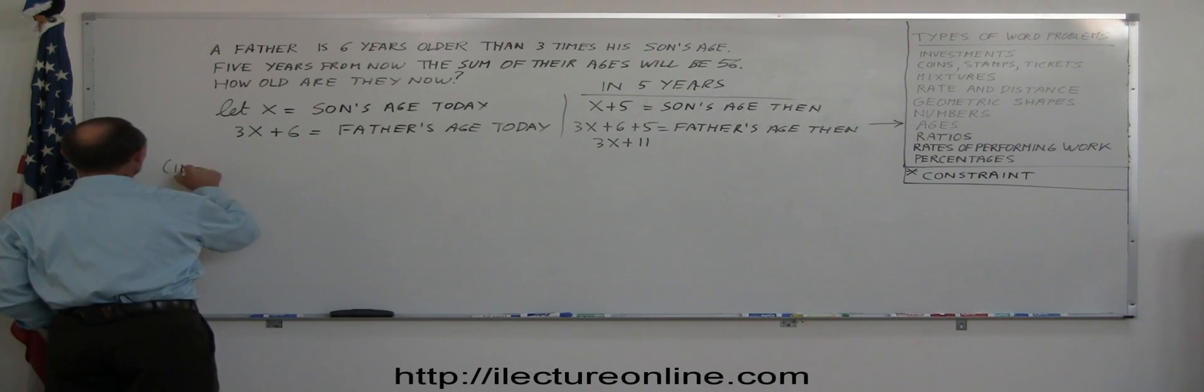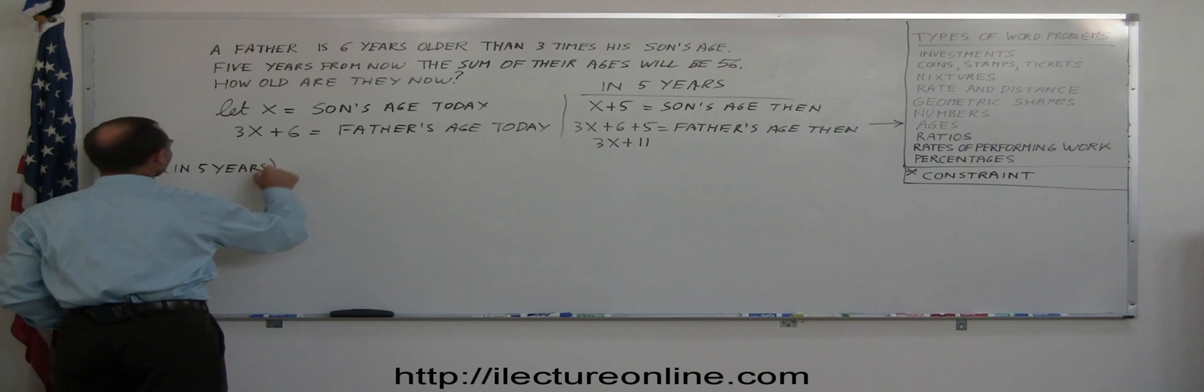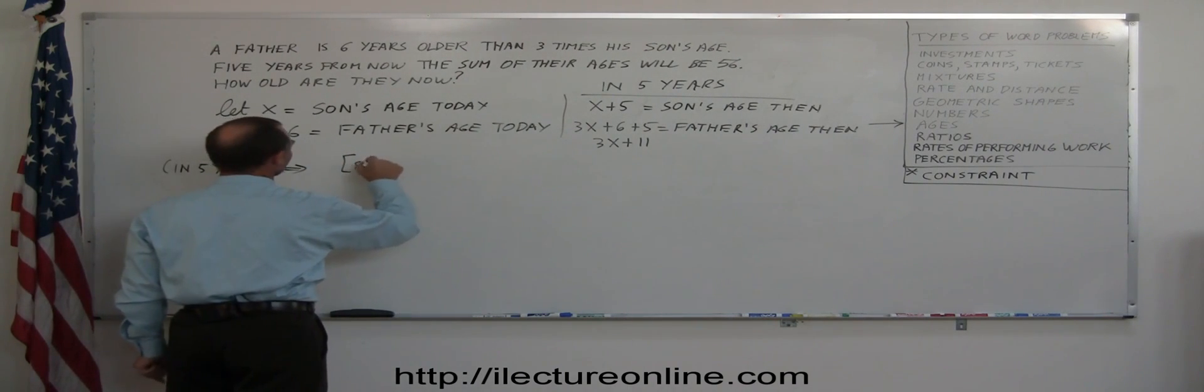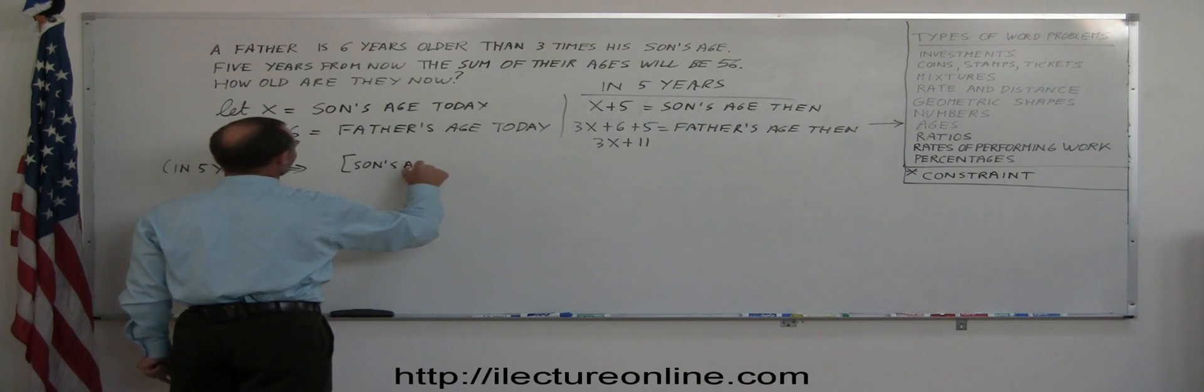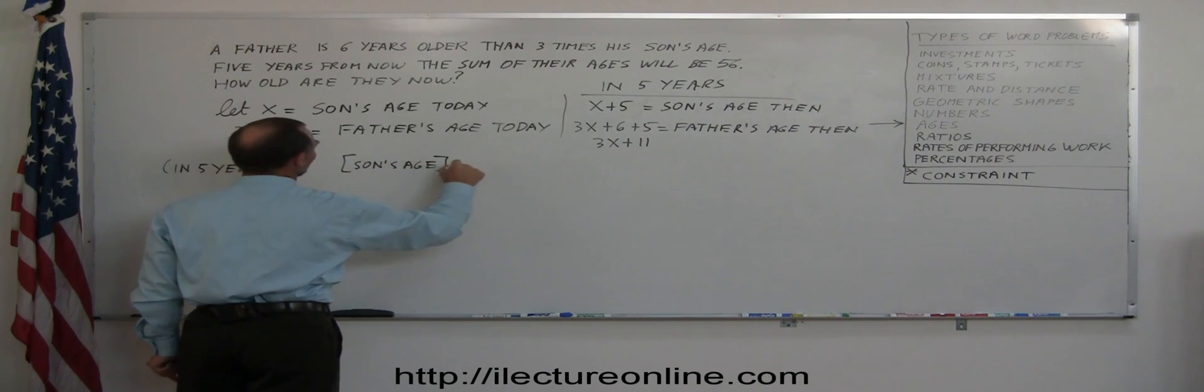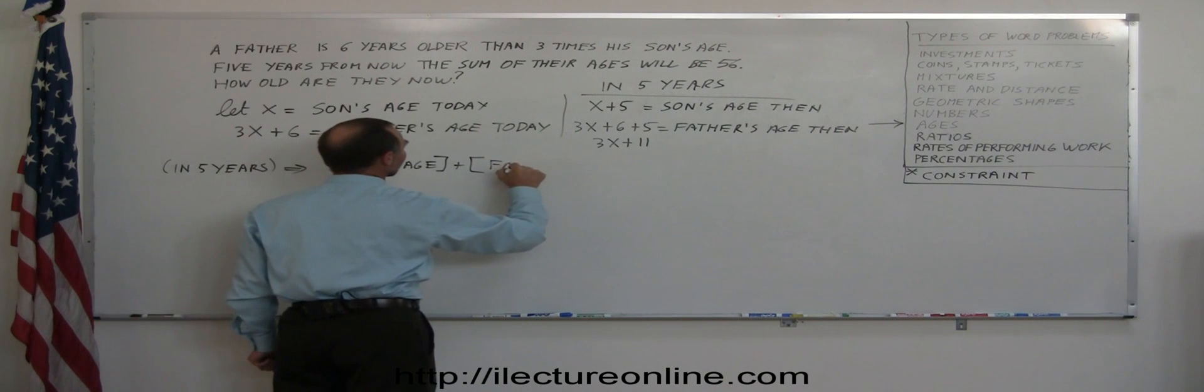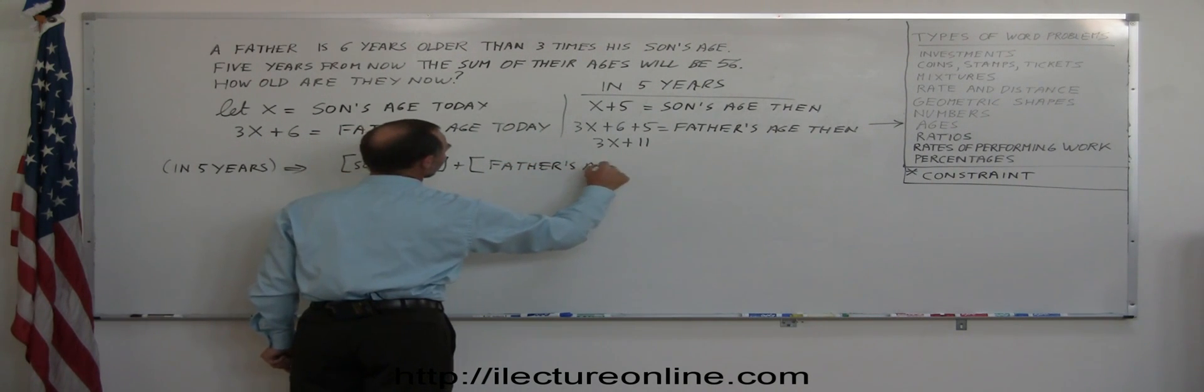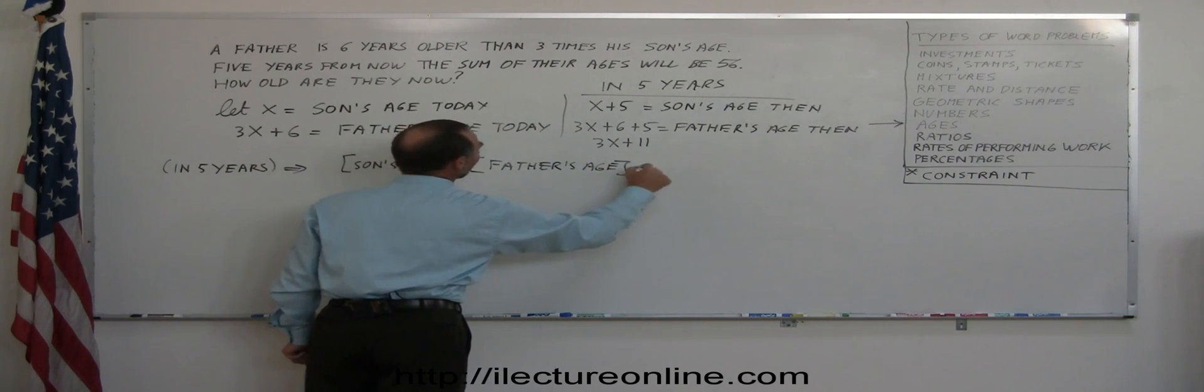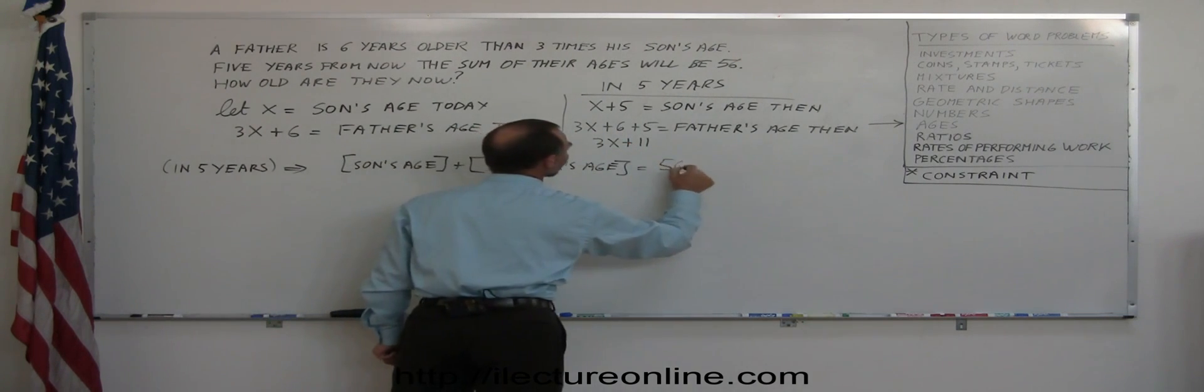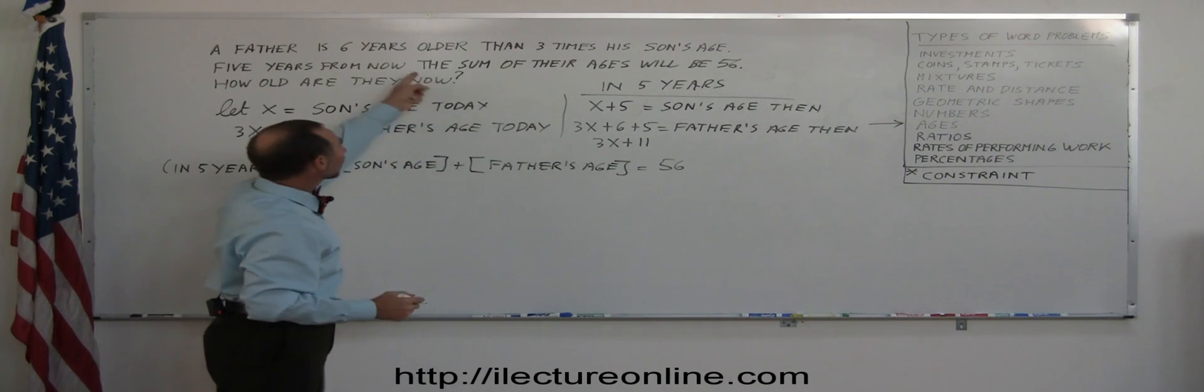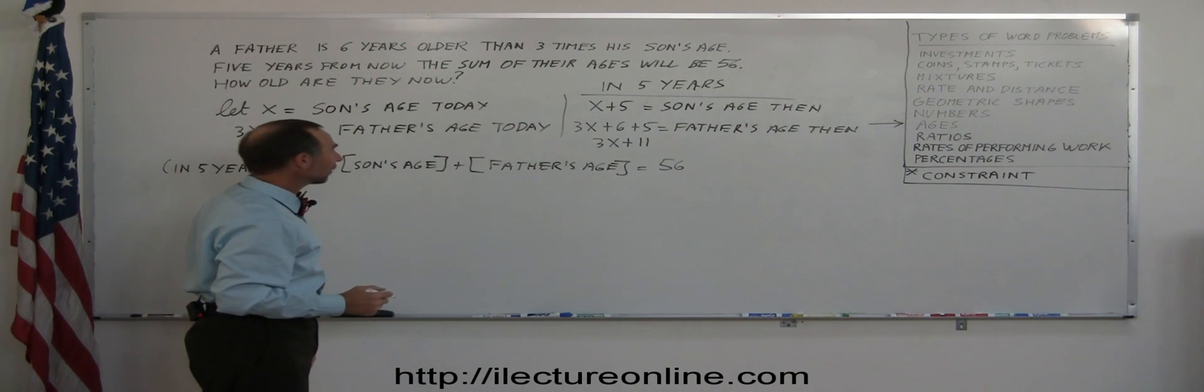So let's write in five years, so we won't make a mistake. The son's age plus the father's age will add up to 56. So here's the mathematical equation of the constraint in terms of their ages in five years.